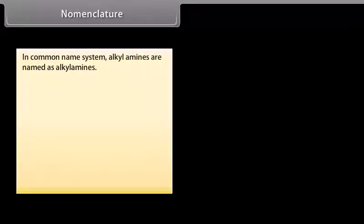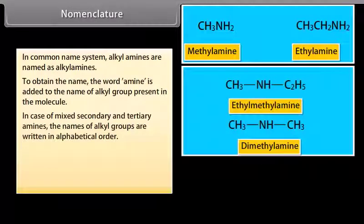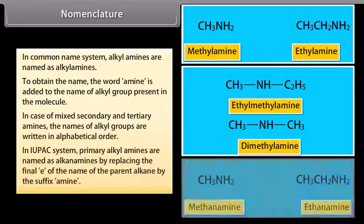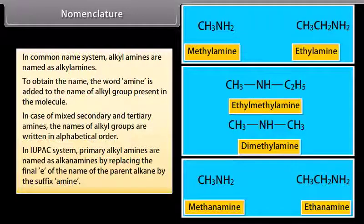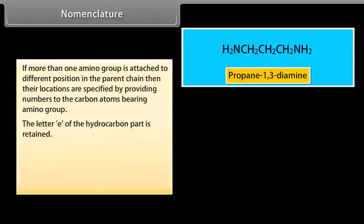In the common name system, alkyl amines are named as alkylamines by adding the word 'amine' to the name of the alkyl group present in the molecule. In case of mixed secondary and tertiary amines, the names of alkyl groups are written in alphabetical order. In the IUPAC system, primary alkyl amines are named as alkanamines by replacing the final 'e' of the parent alkane name with the suffix 'amine'. If more than one amino group is attached at different positions in the parent chain, their locations are specified by numbering the carbon atoms bearing the amino group, and the 'e' of the hydrocarbon part is retained.